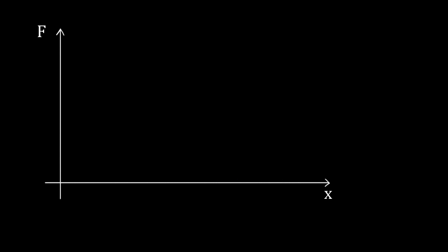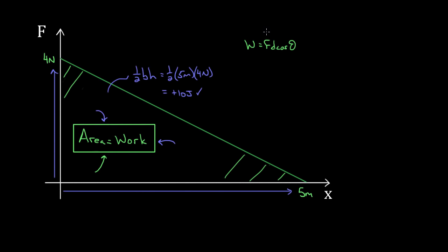To recap: if your force is constant, you can use W = Fd cosine theta to find the work done. But you can also find work by determining the area underneath a force versus position graph. This is especially useful when the force is varying, which would make the equation unusable. As long as the shape of the graph is one you know how to find the area of — a rectangle, triangle, or combination — you can find the work done without calculus.